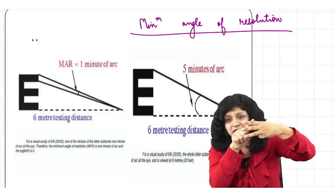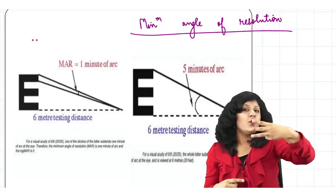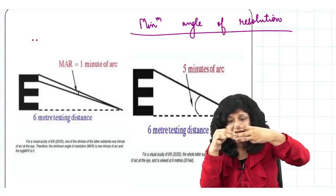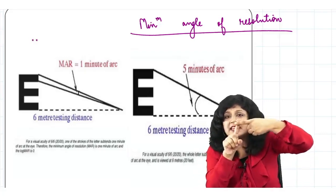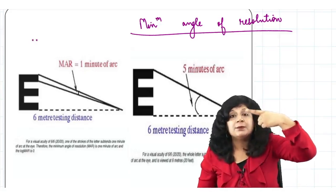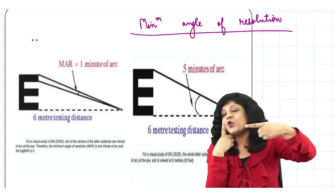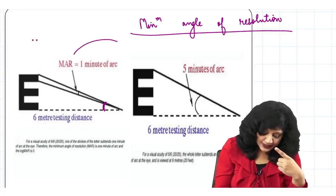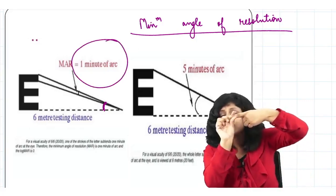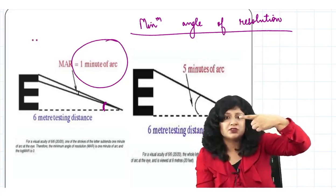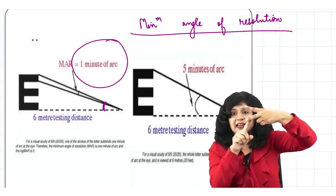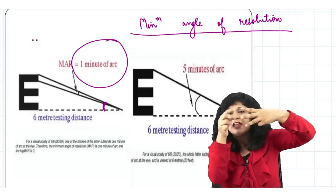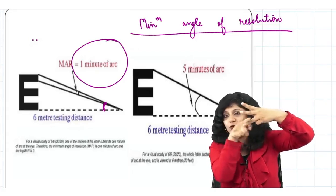To see the full letter E, I must see three limbs separately — this one, this one, and this one. In order to see one single limb, the angle subtended at the nodal point (the center of the lens) must be at least one minute of arc. So one minute for each limb, and one minute for each of the two gaps between the limbs.